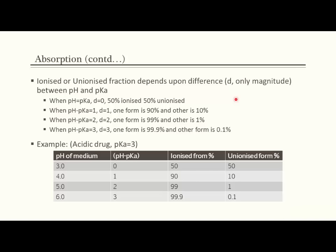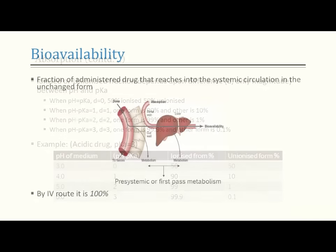Example: an acidic drug with pKa = 3 placed at pH 3 gives a difference of 0, so 50% is ionized and 50% unionized. At pH 4 (difference = 1, moving basic), the ionized fraction increases to 90% and unionized is 10%. At pH 5 and 6, as the difference increases further, the ionized form continues to increase.